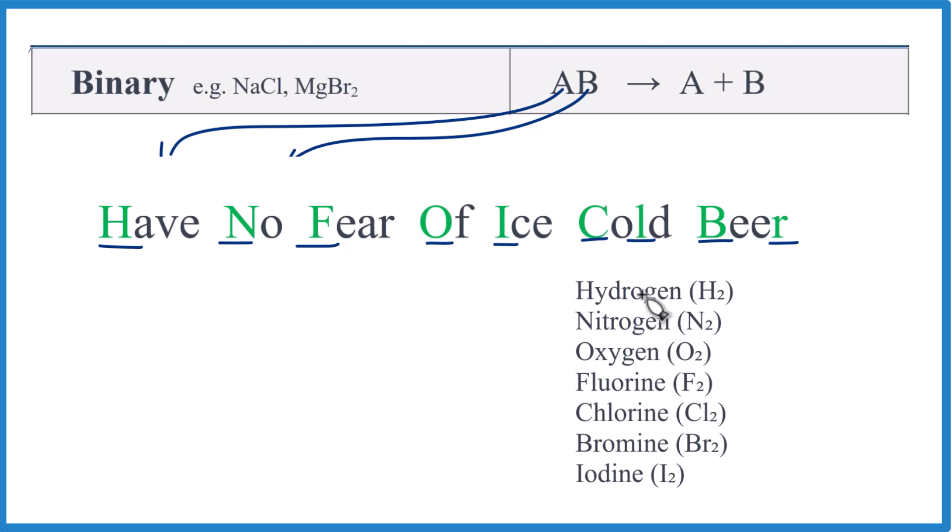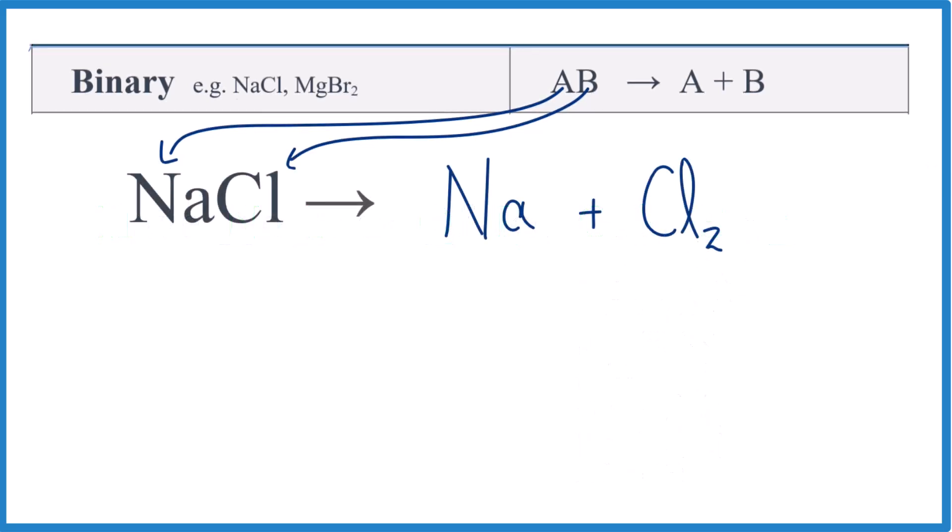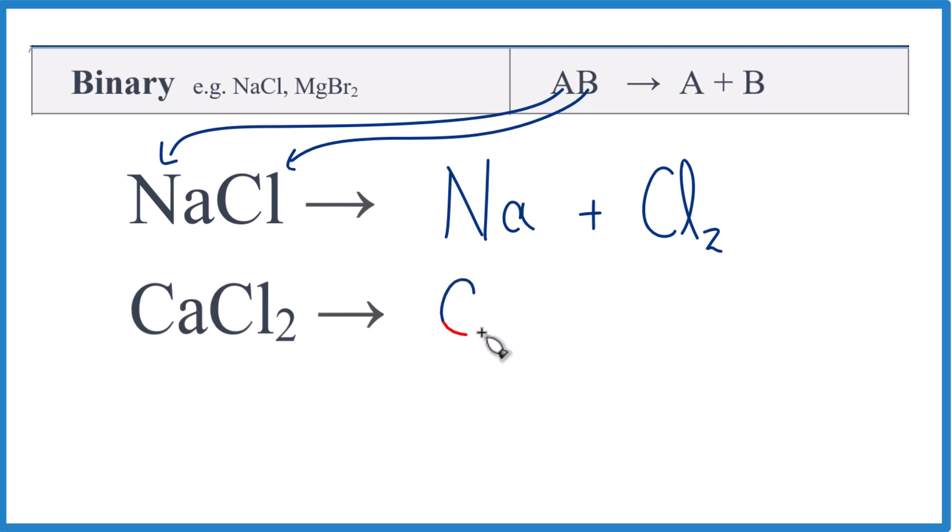All right, back to the decomposition reactions. So remembering those diatomics, pause and figure out what we get when CaCl2 undergoes decomposition. So we'll have our Ca, and then we'll have our Cl, but remember it's Cl2 because it's a diatomic gas.